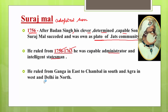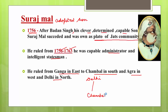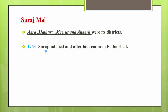The overall area of his rule extended from the Ganga in the east to the Chambal in the south, and from Agra in the west to Delhi in the north. This was his overall territory of rule. Suraj Mal tried to lay the foundation of a very strong state.